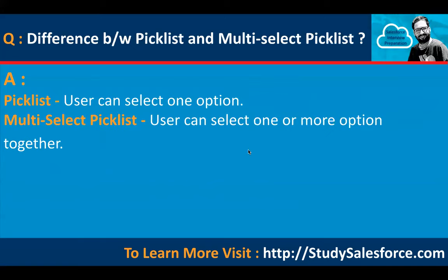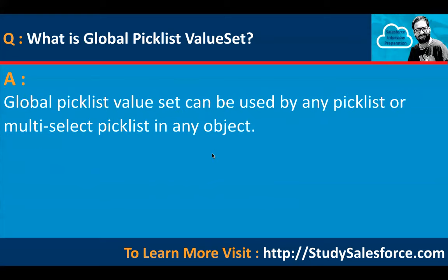What is the difference between picklist and multi-select picklist? It is quite simple: in a picklist, a user can select one option; in a multi-select picklist, a user can select one or more options together.